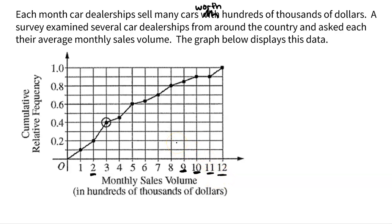A great question: what's that circled dot represent? That means a monthly sales volume of $300,000 is at the 40th percentile. 40% of car dealerships sell less than or equal to $300,000 in cars. From around the country, 40% of dealerships sell $300,000 or less — obviously that means 60% sell more.